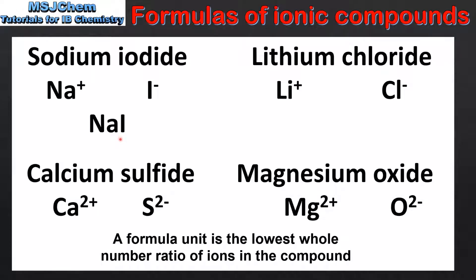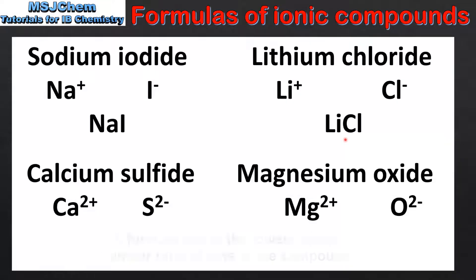This tells us the ratio of ions in a formula unit is 1 to 1. Our next example is lithium chloride, composed of lithium ions and chloride ions. Lithium ions have a 1+ charge and chloride ions have a 1− charge. To make a neutral compound we need 1 of each type of ion, therefore the formula is LiCl — ratio 1 to 1. The next example is calcium sulphide, composed of calcium 2+ ions and sulfide 2− ions. To make a neutral ionic compound we need 1 of each ion, therefore the formula is CaS, with a ratio of 1 to 1.